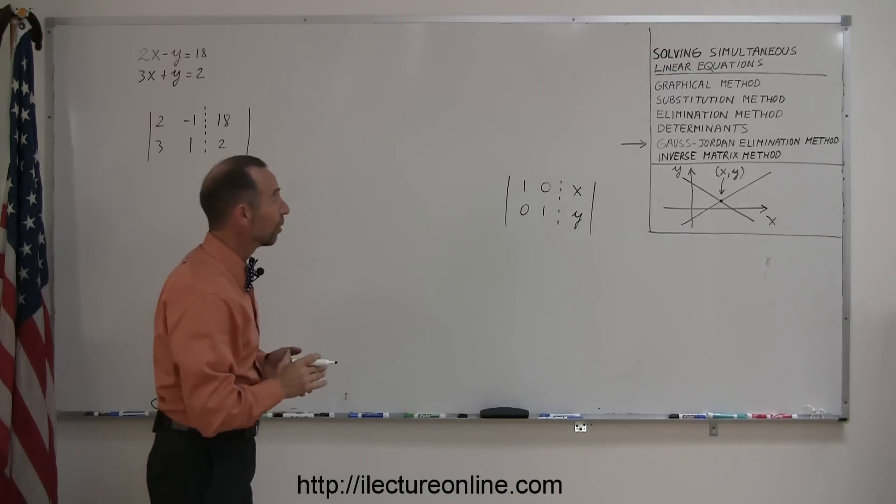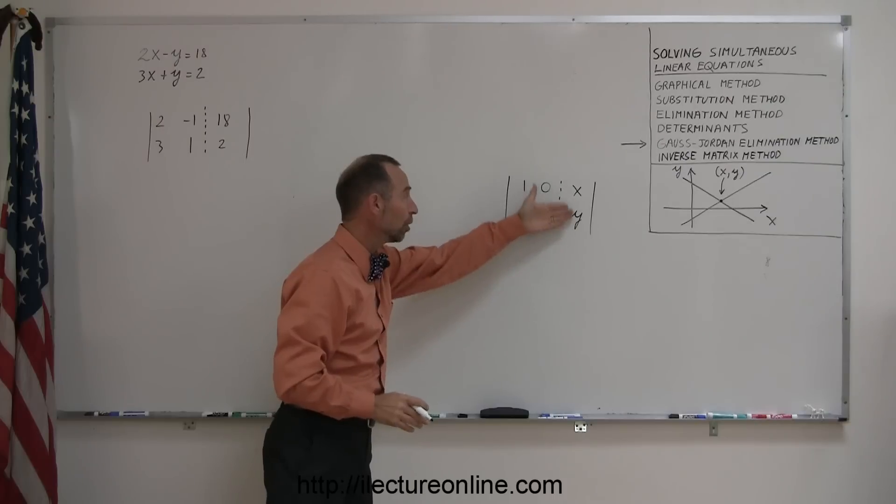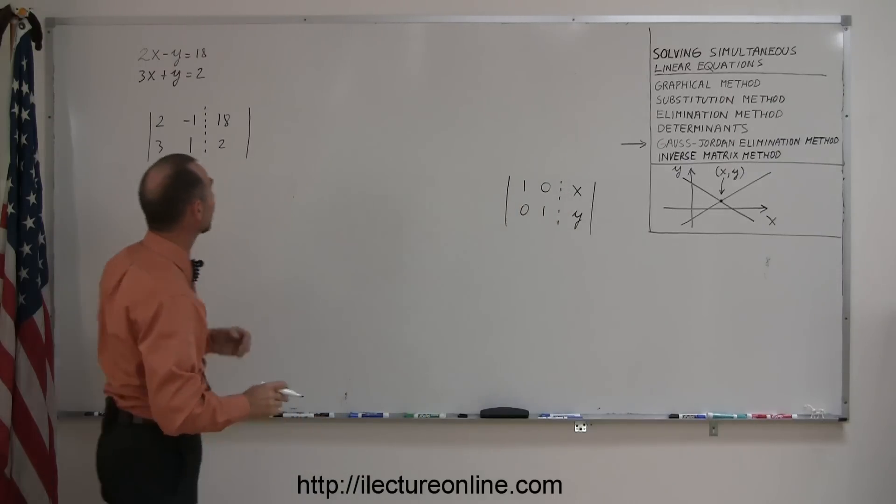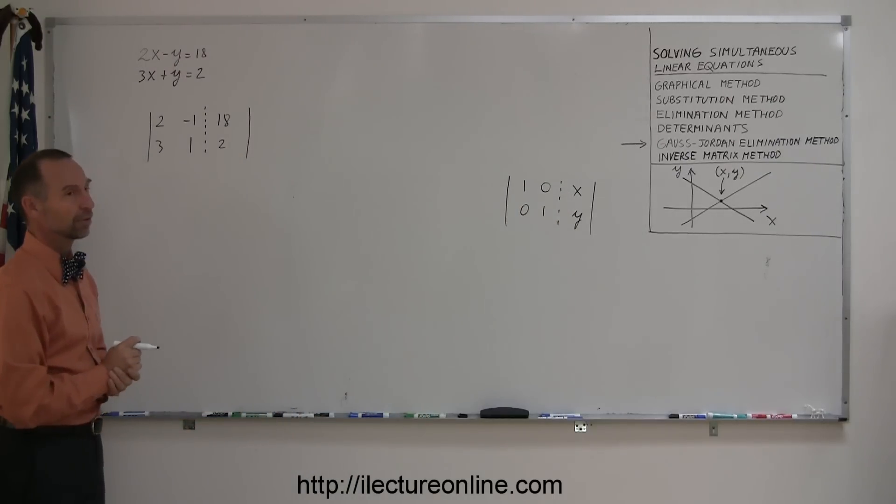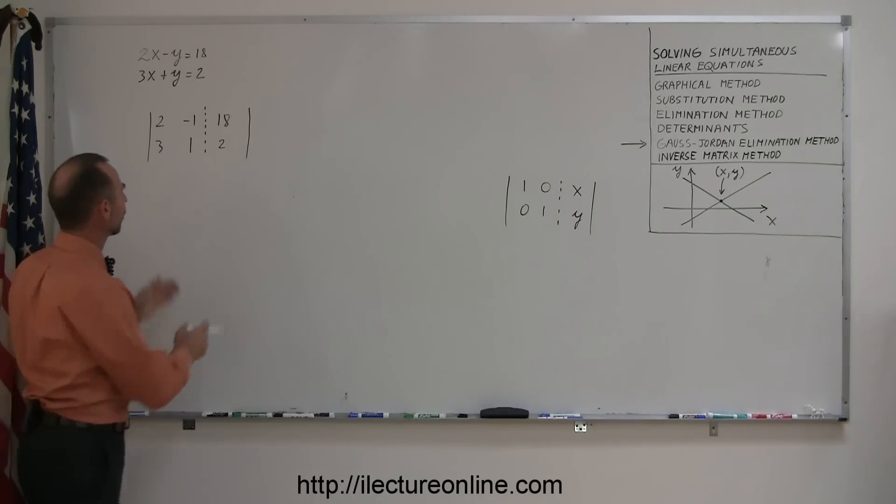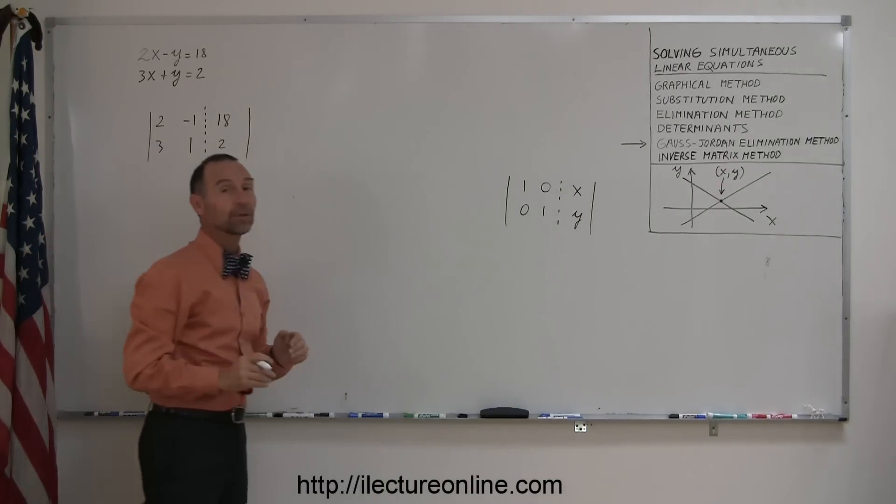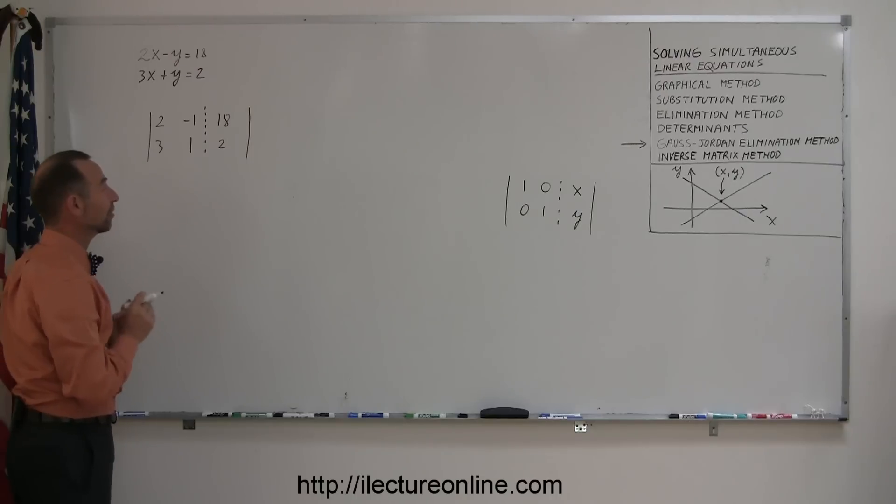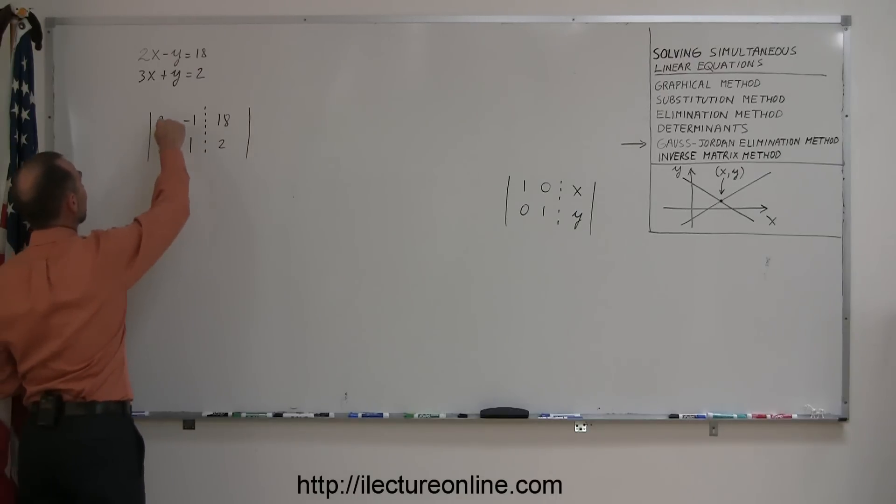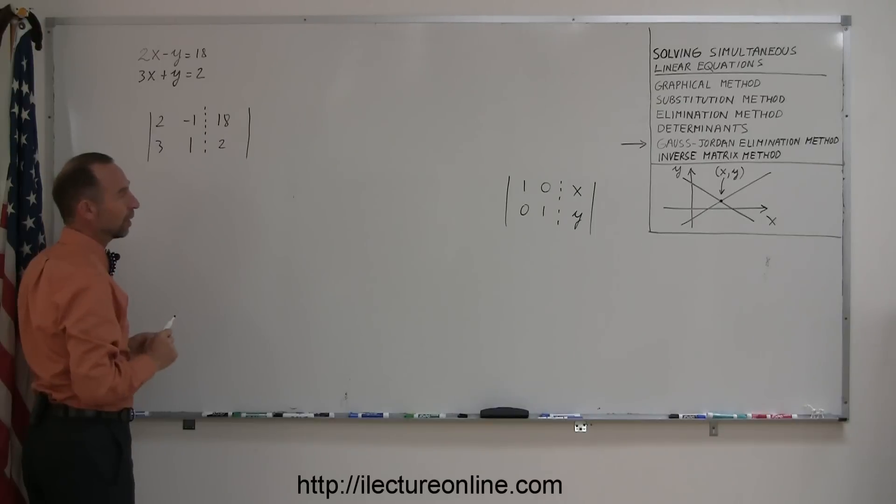So you end up with a 1 across the diagonal, 0 in the other direction, and then the value for x and y will be over here. You can actually, when you get to this stage, read the actual solutions, the two numbers representing the x and the y coordinate of the point where the two lines cross. So the question is, how do you go from here to here?